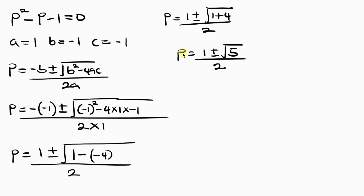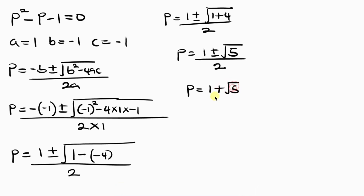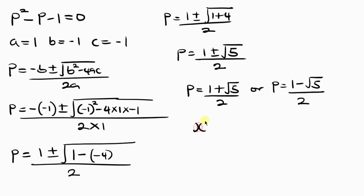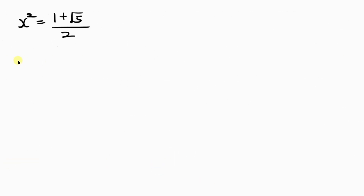We have two values of P. P equals 1 plus the square root of 5, all over 2, or P equals 1 minus the square root of 5, all over 2. Let's focus on the first value. Remember we said let X squared be equal to P, so substituting: X squared equals 1 plus the square root of 5, all over 2. In order to get X, I need to take the square root of both sides to cancel off the square.